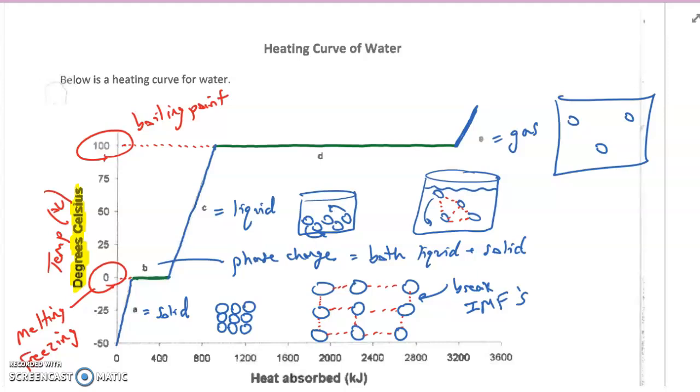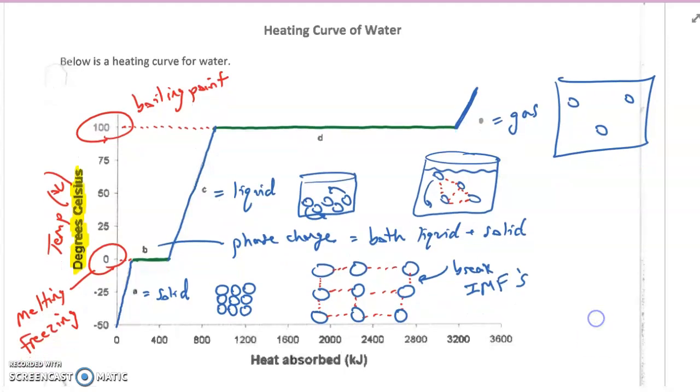Now, when I look at one of these graphs, oftentimes you'll have questions that ask you, does the process of going from a liquid to a gas, is that endo or exothermic? Because heat absorbed is my x-axis down here, whenever I read this graph, reading it left to right, so if I ever go from like letter A to letter C, or letter C to letter E, anytime I'm reading it from left to right,